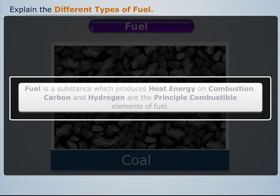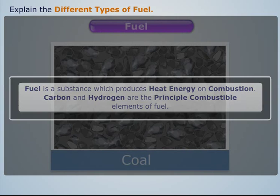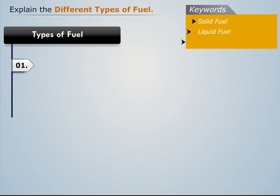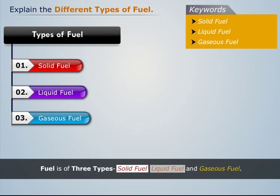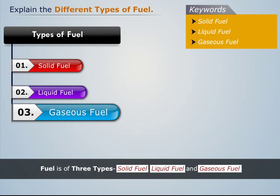Generally, fuel is a substance which produces heat energy on combustion. Carbon and hydrogen are the combustible elements of the fuel. It is of three types: solid fuel, liquid fuel, and gaseous fuel.